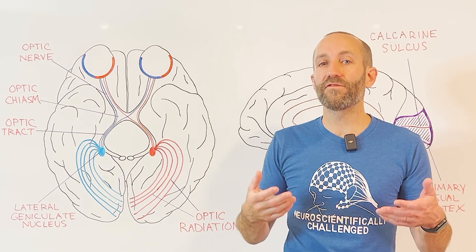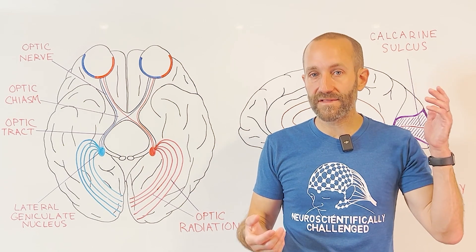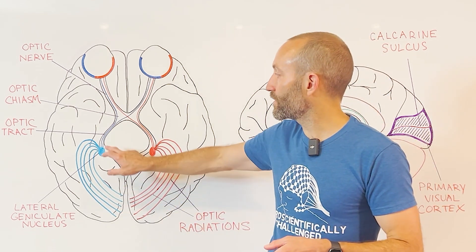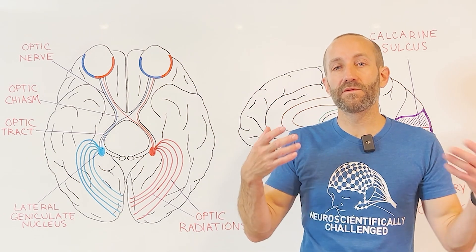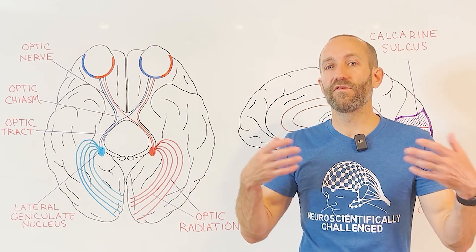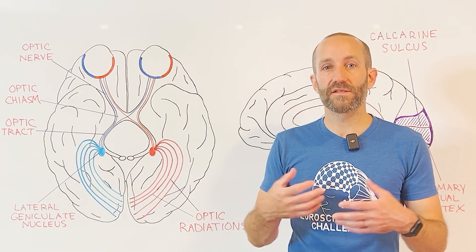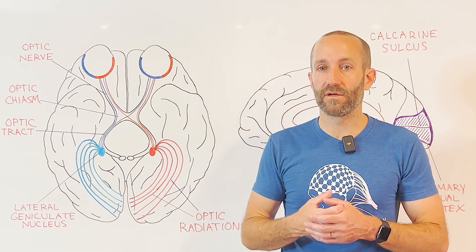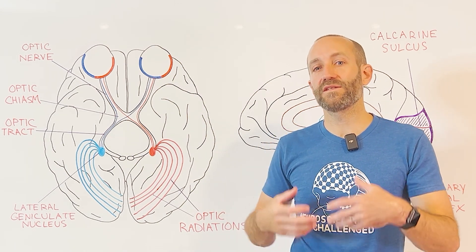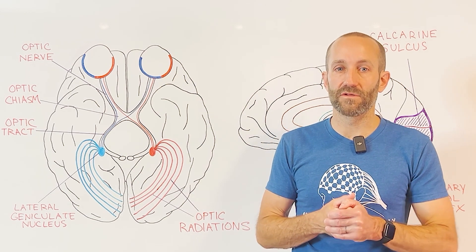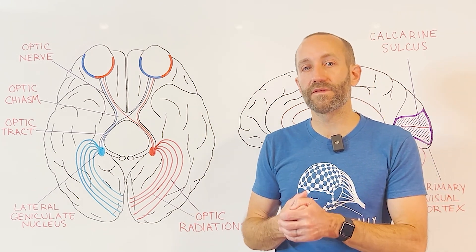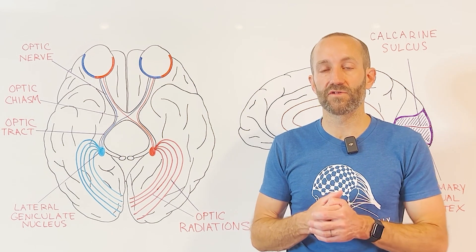The result of this arrangement is that all information from the right visual field ends up traveling to the left side of the brain, and vice versa. After the optic chiasm, the visual fibers are called the optic tract. The optic tracts extend to multiple areas: some fibers go to the pre-tectum in the brainstem, involved in the pupillary light reflex; others go to the suprachiasmatic nucleus of the hypothalamus, which helps maintain circadian rhythms; and others go to the superior colliculus, which helps coordinate head and eye movements to focus on objects of interest.